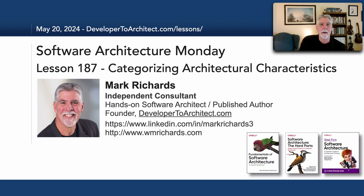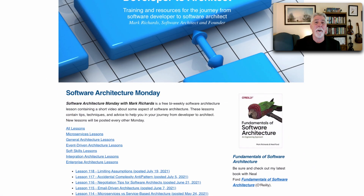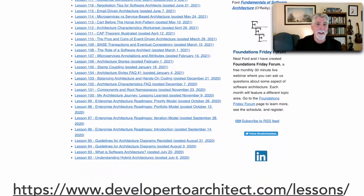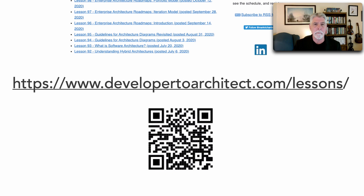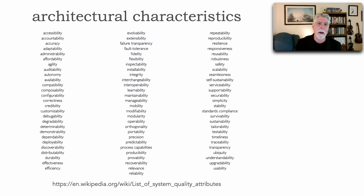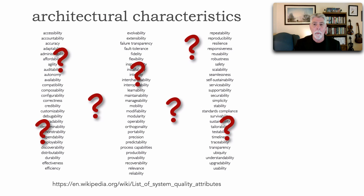Hello everyone and welcome to Software Architecture Monday. My name is Mark Richards and in this lesson number 187 we'll take a look at various categories of architectural characteristics, what some people call non-functional requirements or NFRs. You can get a listing of all the lessons I do on my website at developer2architect.com/lessons. There are literally hundreds of architectural characteristics that might be possibilities for our particular system, and it starts to get overwhelming about which ones to choose and how to know these groupings of them.